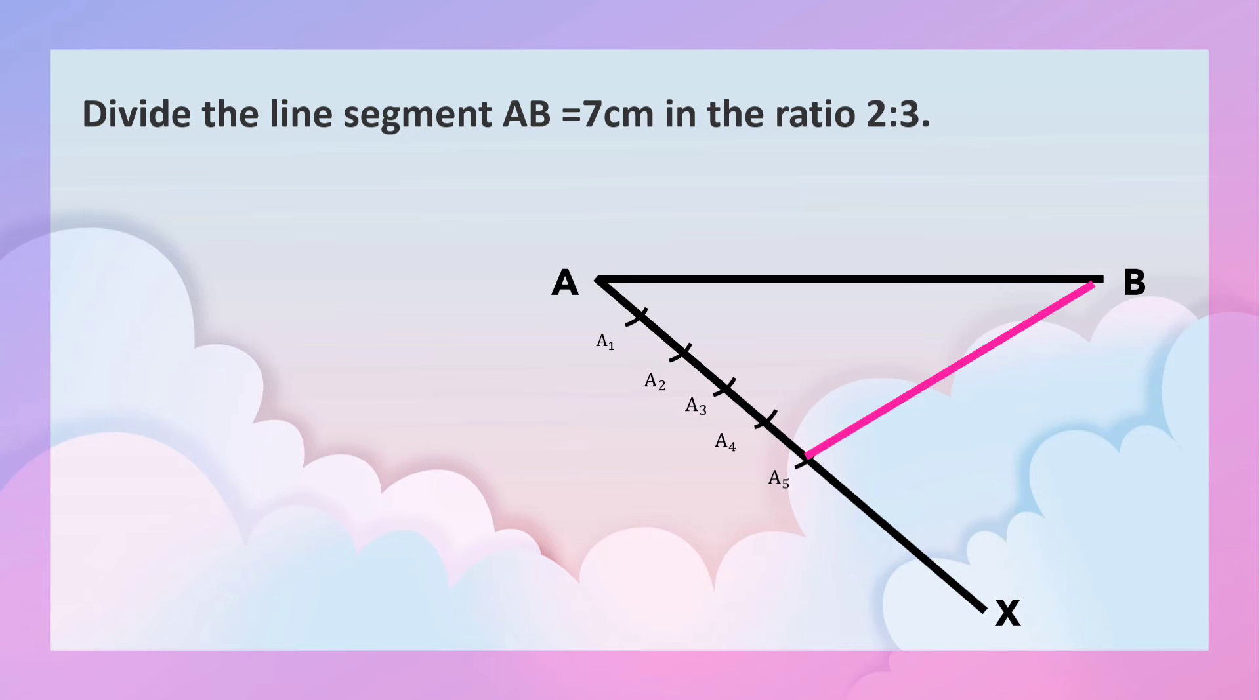Now draw another line which is parallel to A5B from A2. Why from A2? You have to divide the line segment in 2 is to 3. So now draw parallel line to A5B and mark the new point as C.